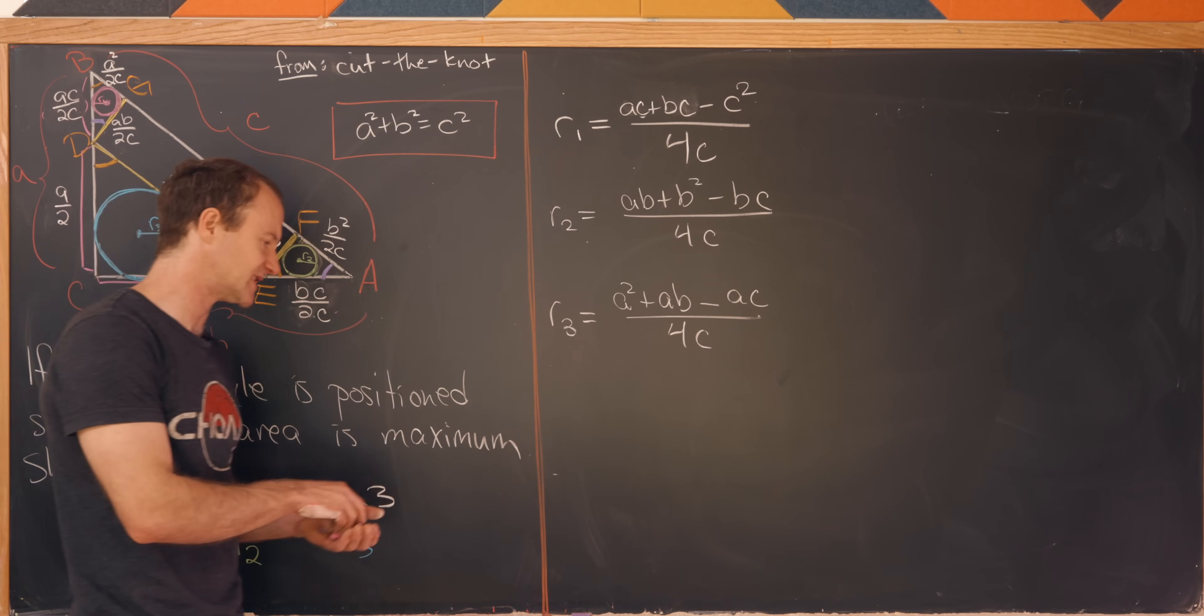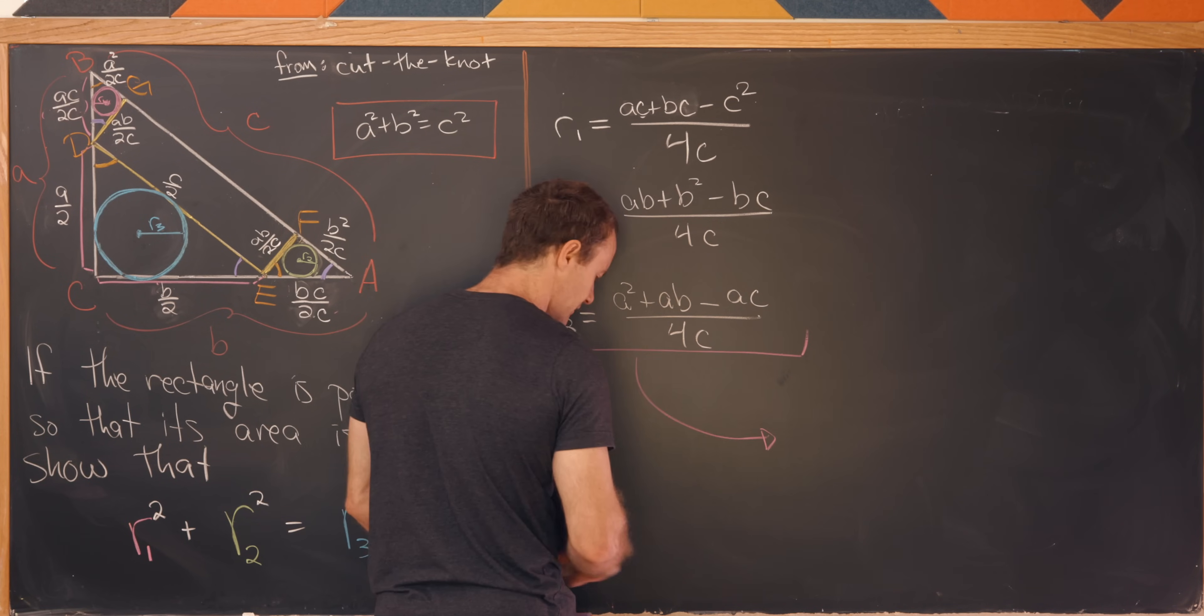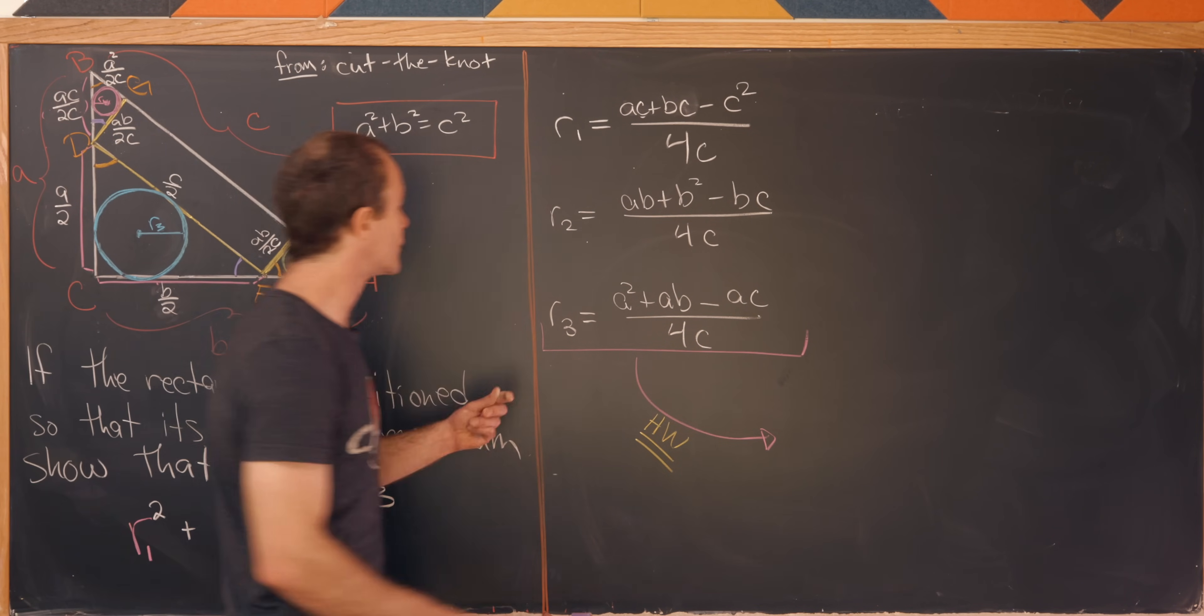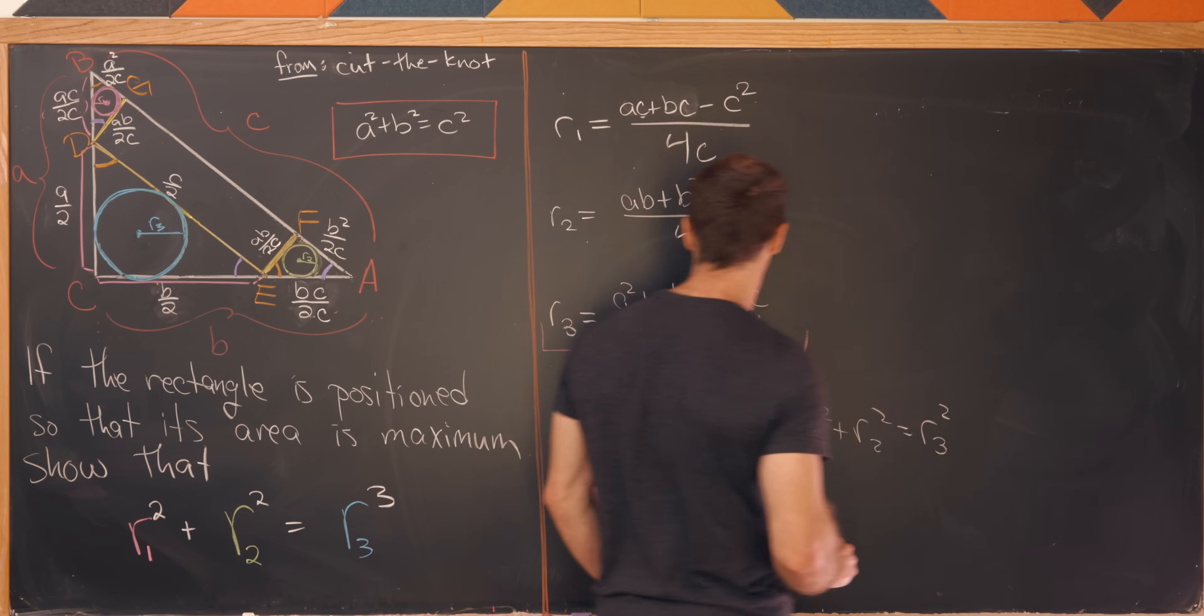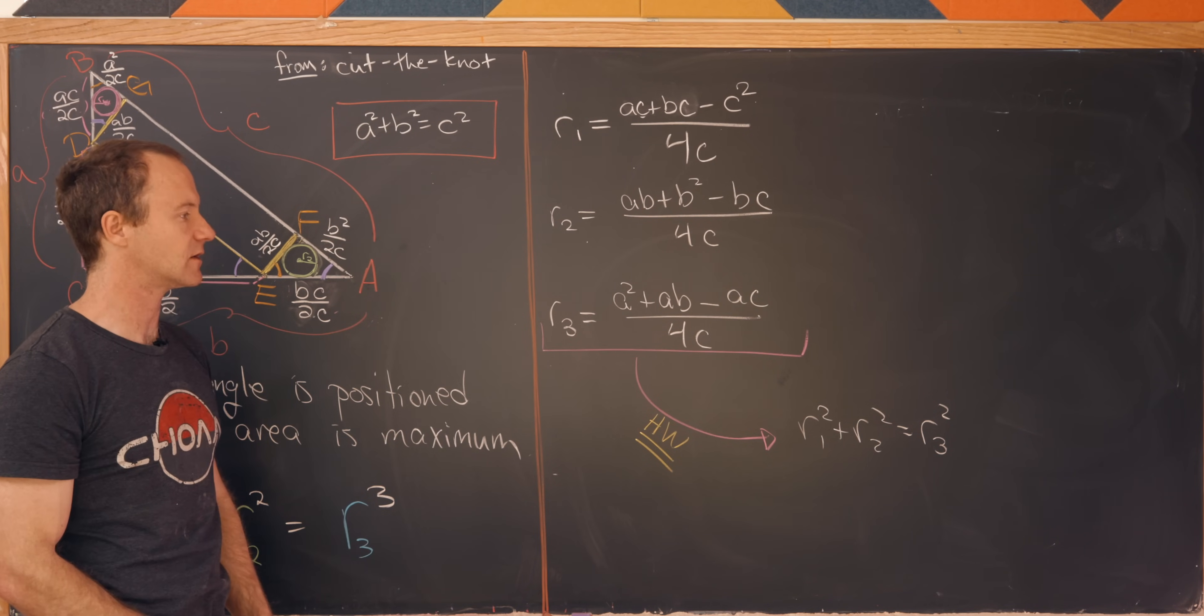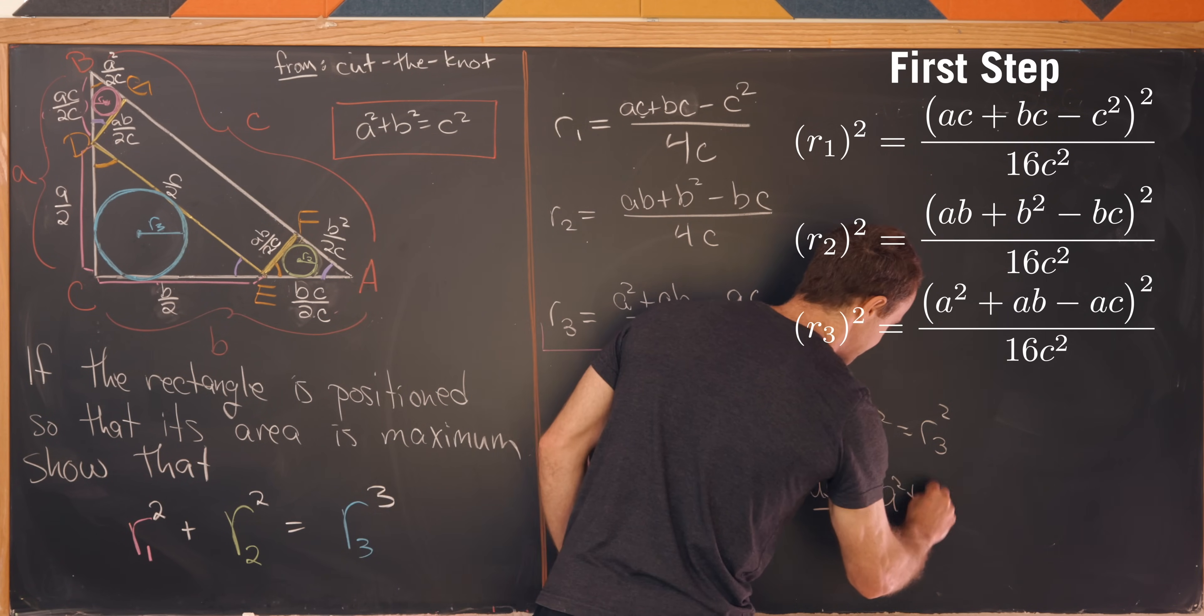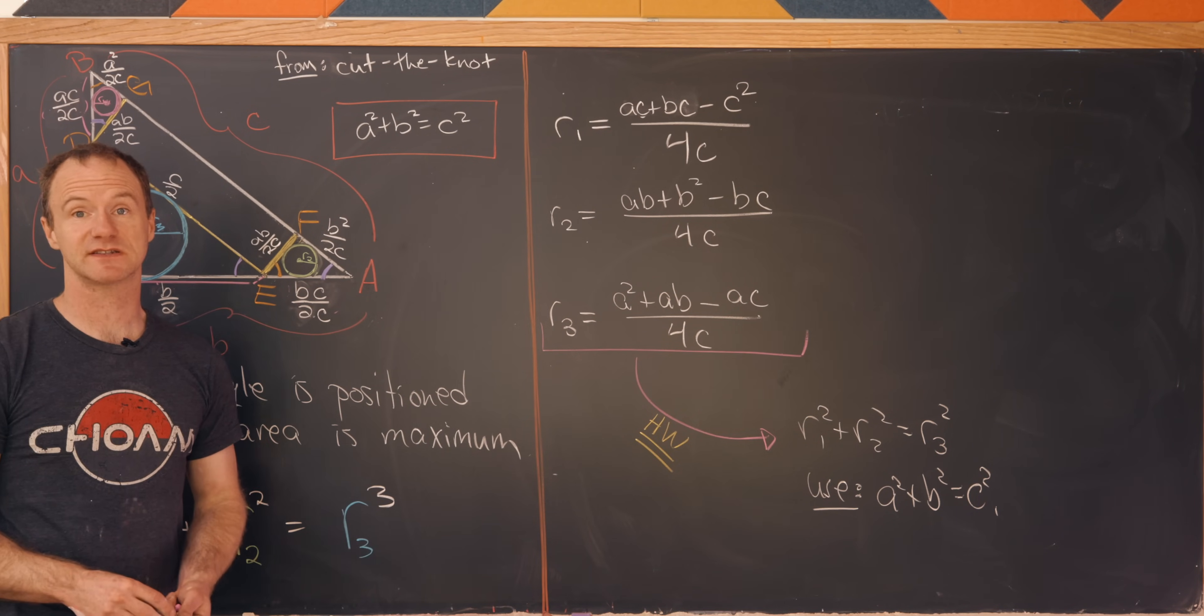From here it's really just a symbolic manipulation slog to get to the end. So I don't think that's super interesting to watch, so I'll leave that as homework. All the interesting stuff is in the setup. As homework, show that r1 squared plus r2 squared is in fact equal to r3 squared given these values of r1, r2, and r3. And of course along the way you'll obviously have to use the fact that we're in a right triangle in the first place, so you'll use the fact that a squared plus b squared equals c squared. And that's a good place to stop.